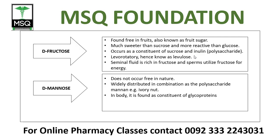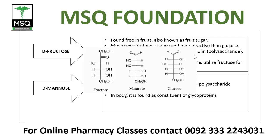D-mannose does not occur free in nature; it is widely distributed in combination as the polysaccharide mannan in the body. It is found as a constituent of glycoprotein, which is a conjugated molecule. The structures of fructose, mannose, and glucose are isomers — their number of carbon, hydrogen, and oxygen atoms are the same.